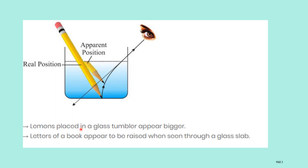The next example: a lemon placed in a glass tumbler of water appears bigger. You can do this experiment yourself — take a glass of water, put a lemon in that tumbler, and the lemon will appear big due to the presence of refraction. Also, the letters of a book appear to be raised when seen through a glass slab. If you see letters with a glass slab, the letters appear raised up, and sometimes even bigger. This is also due to the presence of refraction.